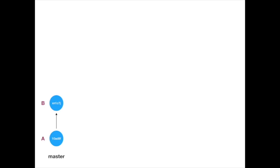Let's say we have two commits in the master branch, A and B, and we have a feature branch with commit C. We implement new features in new branches — this is called feature branching. While I am working on the feature branch, a new commit is pushed to master, commit D. Before continuing to develop my feature, I need commit D in my branch. There are two ways to integrate commit D: merge and rebase.